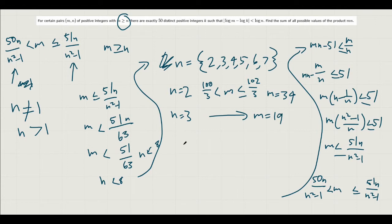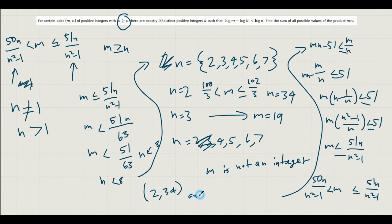And then making our job easier, for any n equals 4, 5, 6, 7, m is not an integer. So we have the solutions: n is 2, m is 34, and n is 3, m is 19. And giving these solutions, we want to find the sum of all possible values of the product mn. And you do the calculation: 68 plus 57 equals 125, and that is the solution.